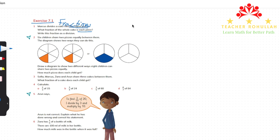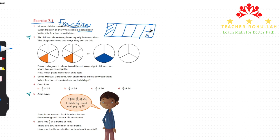For example, if the cake is in a rectangular shape, he can divide it into five equal pieces in this way. Each piece of the cake is showing one-fifth of the whole cake.